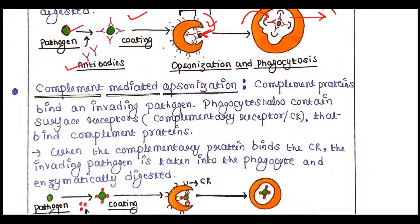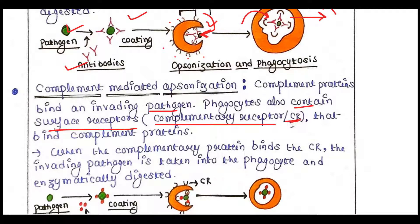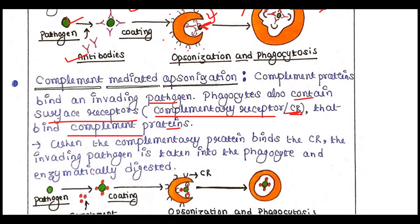Next is complement-mediated opsonization. The mechanism is similar to antibody-mediated opsonization, except that complement proteins bind the invading pathogen instead of antibodies. Phagocytes also contain surface receptors — in this case, complementary receptors (CR) rather than Fc receptors — and these CR receptors bind the complement proteins.